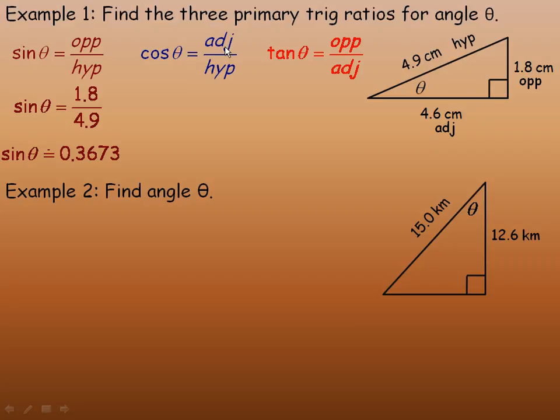The cosine ratio is the ratio of the adjacent to the hypotenuse. So the adjacent is the 4.6 side, and the hypotenuse is the 4.9. And so we would divide 4.6 by 4.9, and get cos of the angle is about 0.9388.